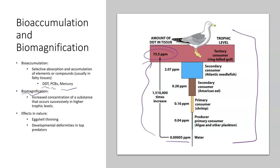Some effects that occur in nature due to bioaccumulation include eggshell thinning. That was part of the reason bald eagle populations originally had trouble recovering — because of bioaccumulation and biomagnification of DDT. Rachel Carson's book Silent Spring documents that out in nature. In humans, that can cause reproductive, nervous, and circulatory system issues, particularly as we look at the impacts of mercury as we work our way up the food chain.